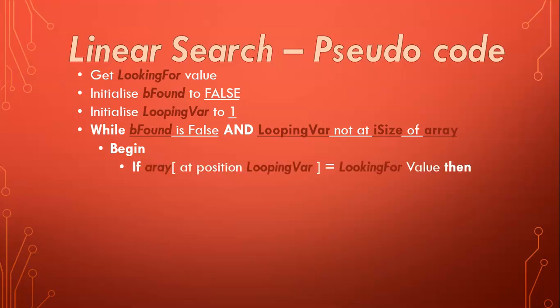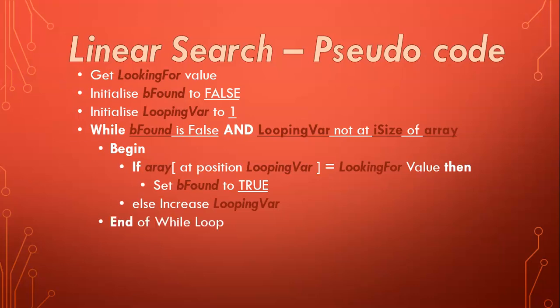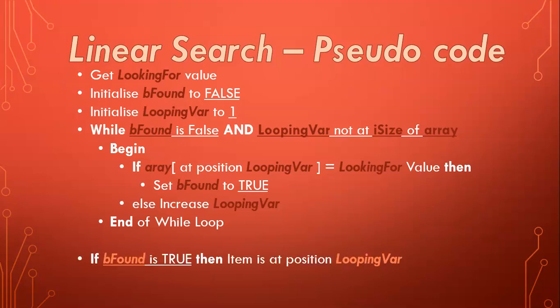Inside the while loop, we check if the value at the looping variable's position in the array is the same as what we're looking for. If so, we set 'be found' to true. You can optionally record its position, but you don't have to — because you only increase the looping variable if you haven't found the value. The moment you find what you're looking for, the loop stops, and the looping variable remains at the position of the found value. Otherwise, we just increase the looping variable and keep checking. At the end, if 'be found' is true, we output the position; if not, we say it wasn't found.